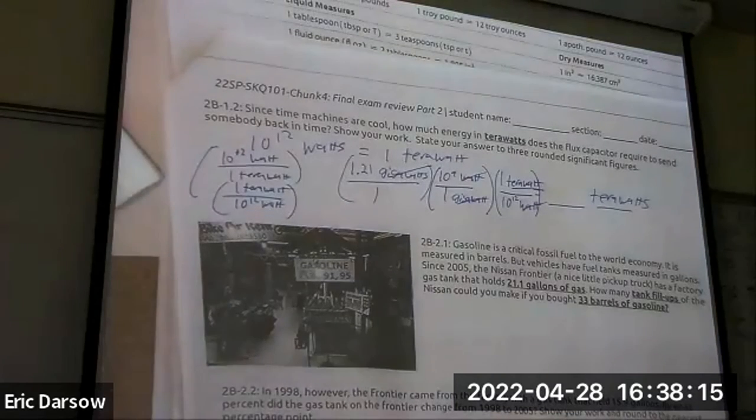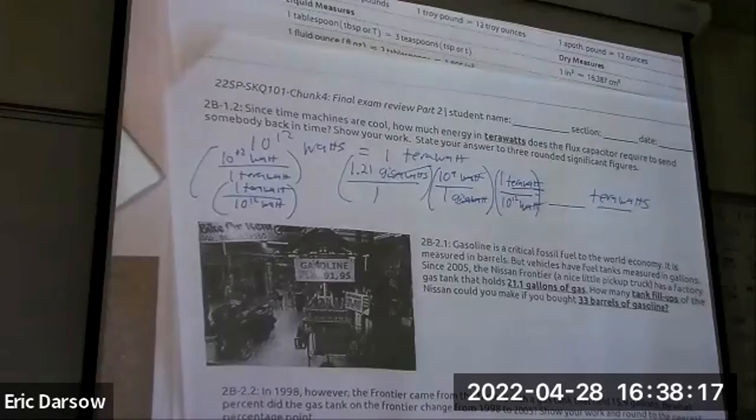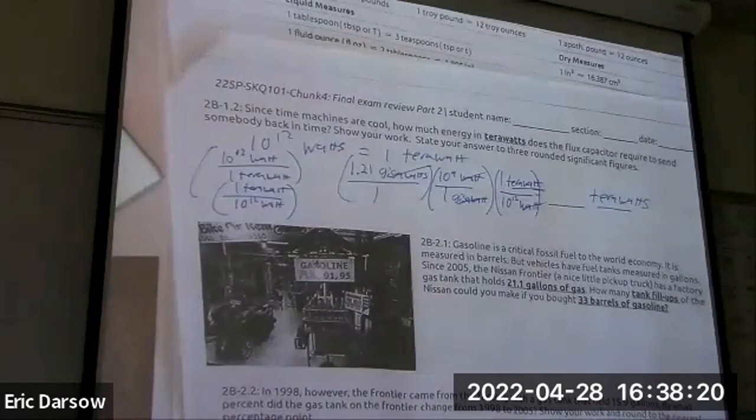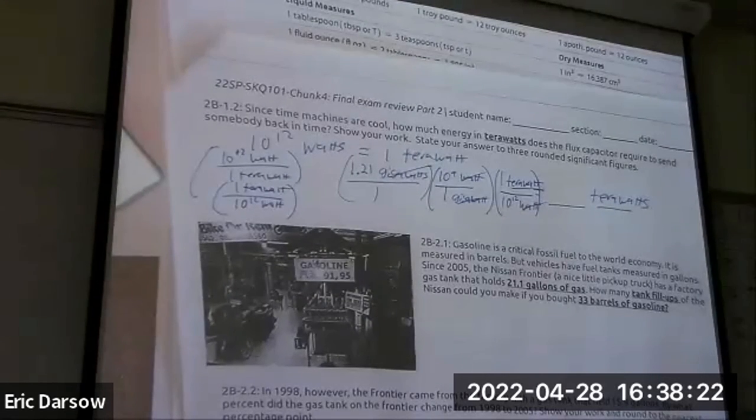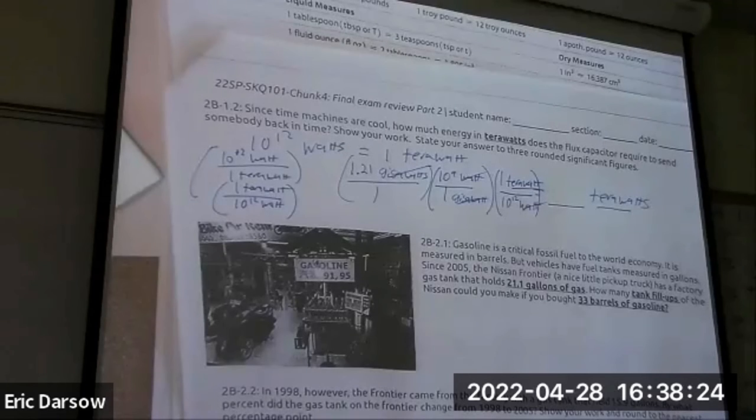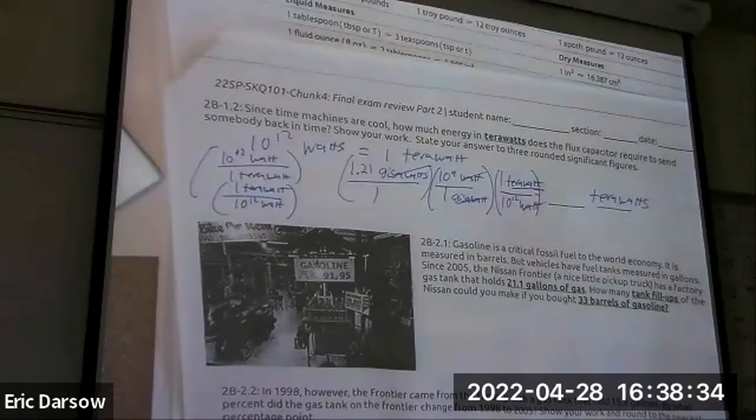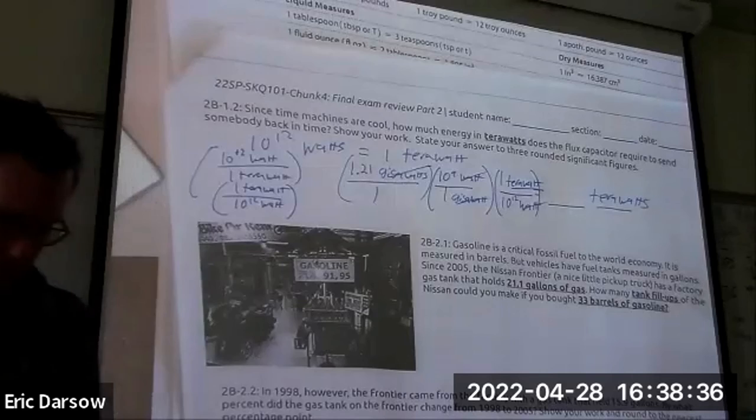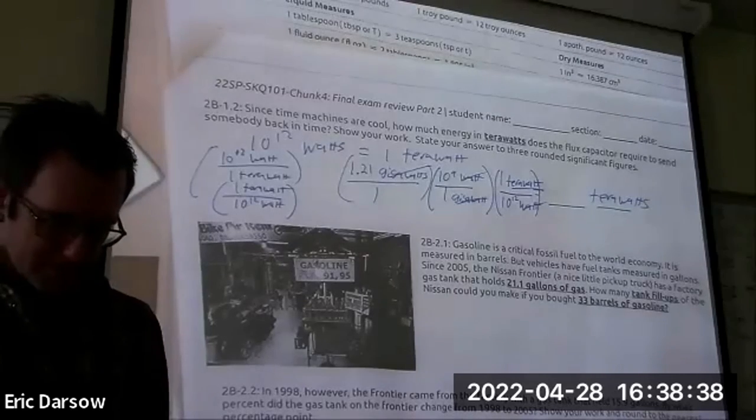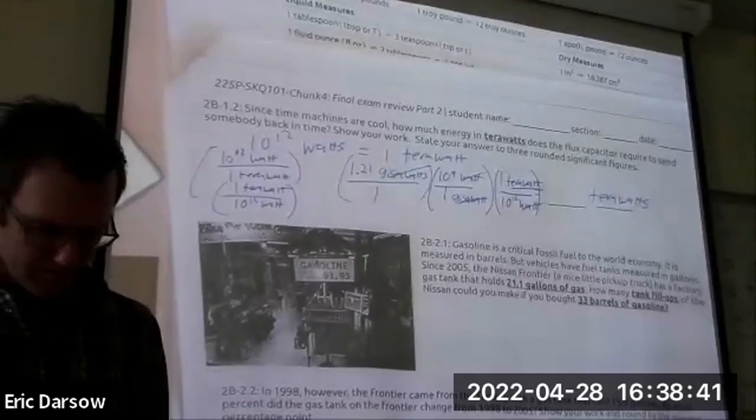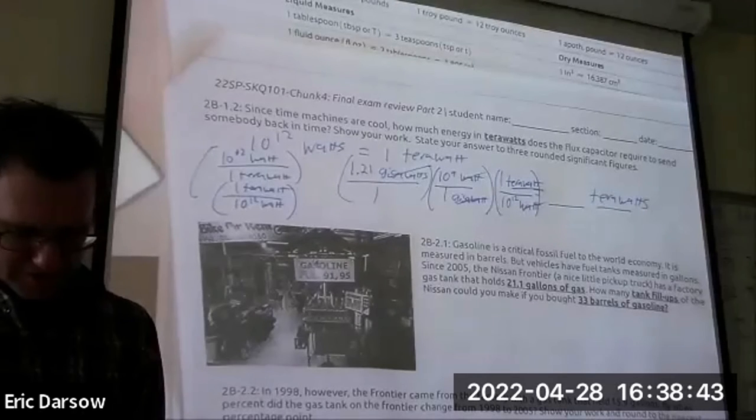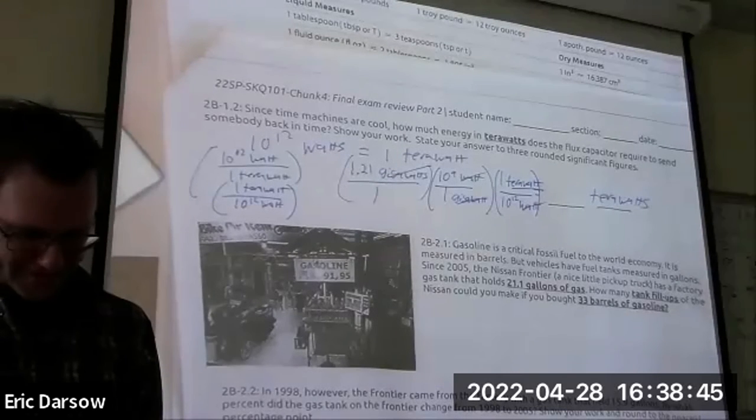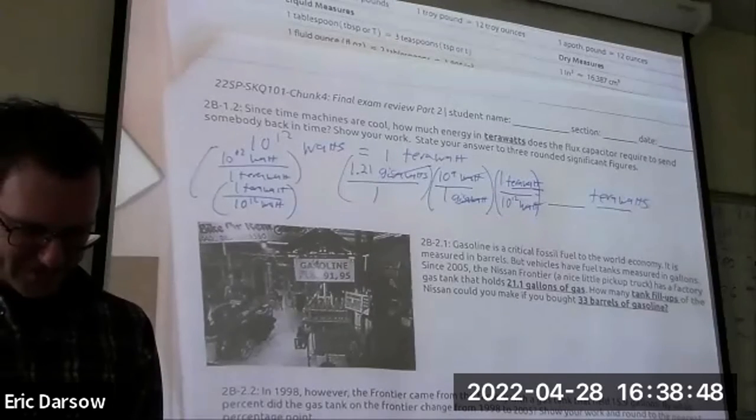Sanity check: should it be more or less than 1.21? Less, because a terawatt is bigger than a gigawatt and we only have about one gigawatt. So we should be going to a smaller number as opposed to a bigger number of milliwatts. Let's see, this is great. I'm so excited to see what this comes out to be. I like math. I think it's cool.